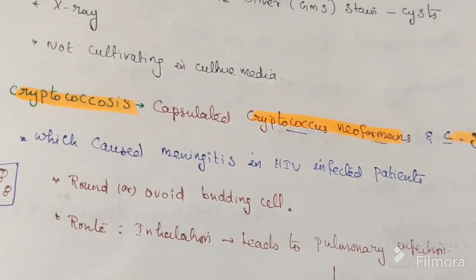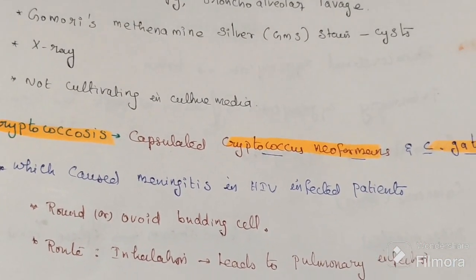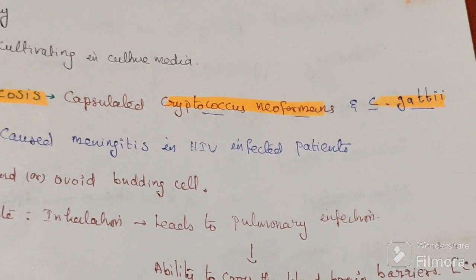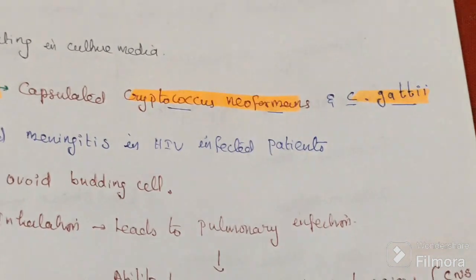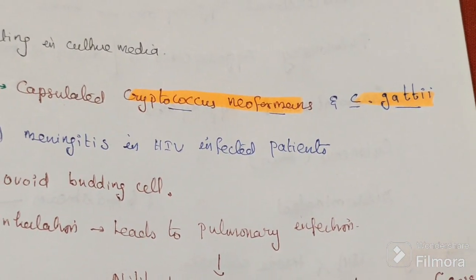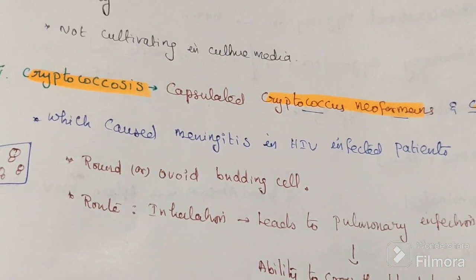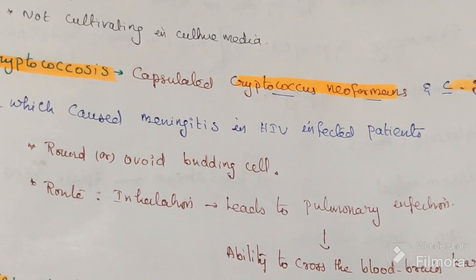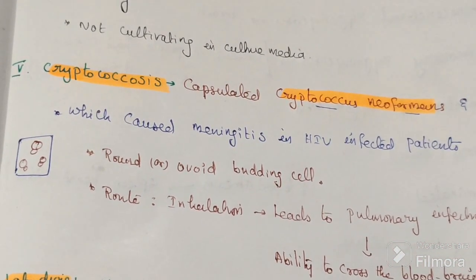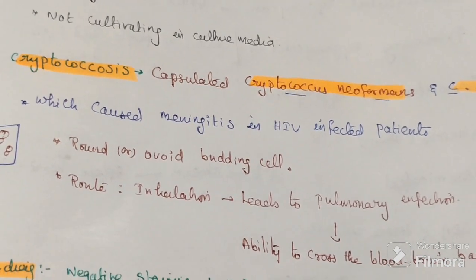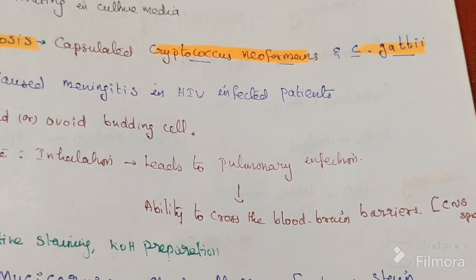The fifth fungus is Cryptococcus, which is a capsulated organism. Two species cause cryptococcosis: Cryptococcus neoformans and Cryptococcus gattii. Cryptococcus gattii causes meningitis in HIV-infected patients. It is a round budding cell that enters through inhalation and leads to lung infection.